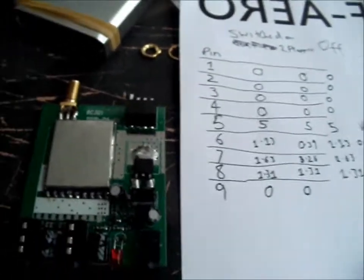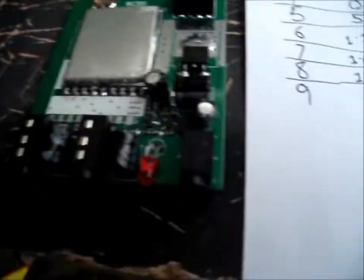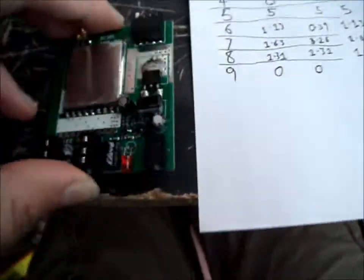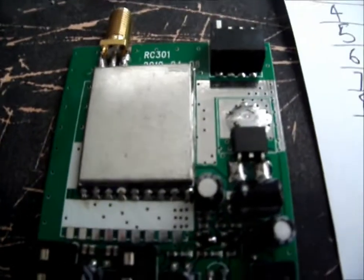Hello everyone, so this is the inside of a Foxtech 5.8GHz receiver. Just found the RSSI pin.